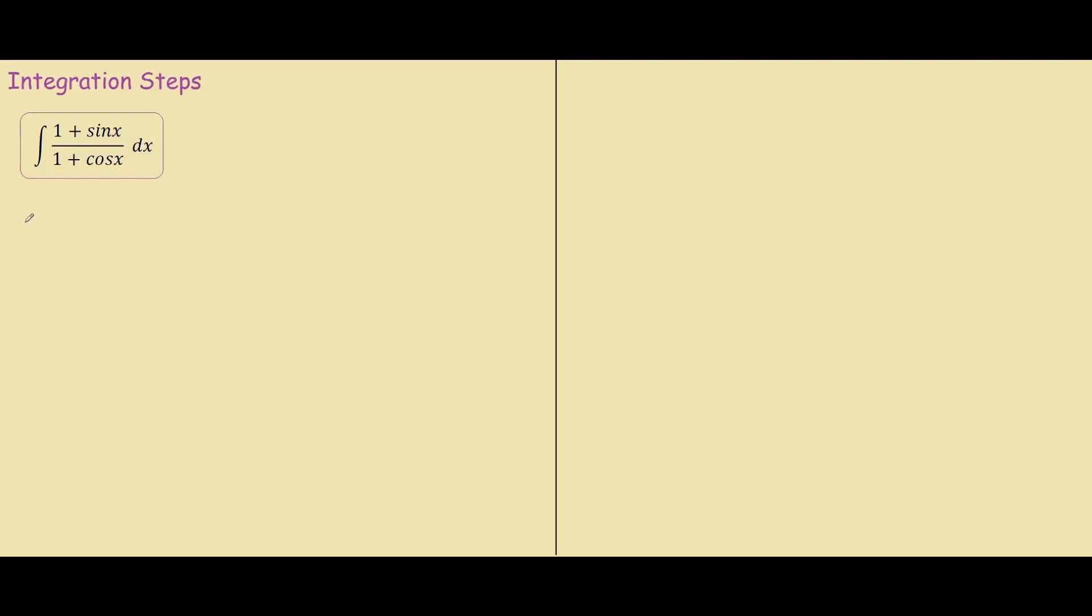Okay, so to begin this problem, what you want to do is multiply the numerator and denominator by the conjugate of 1 plus cosine x.